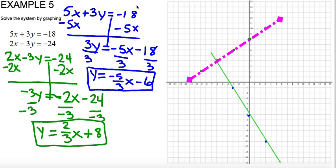And that intersection point is at negative 6, positive 4. And that is my solution. Negative 6, positive 4.